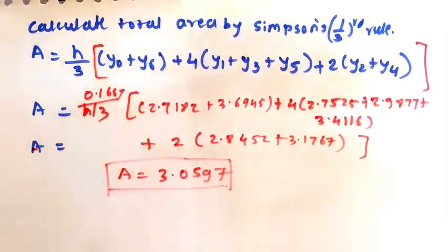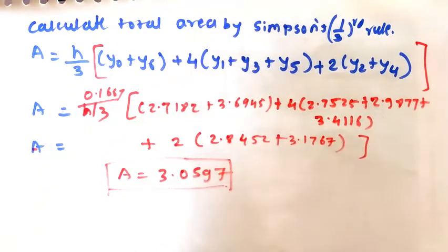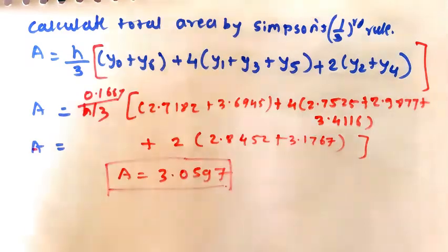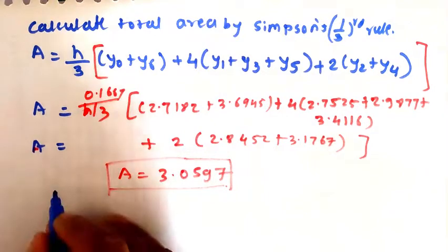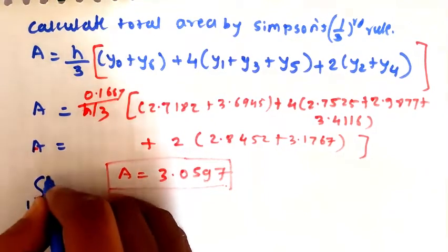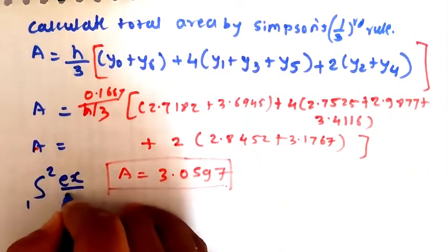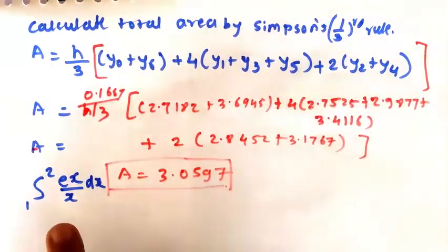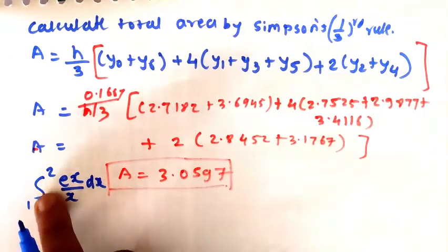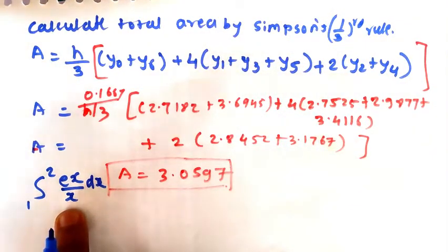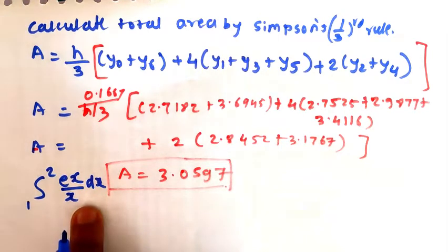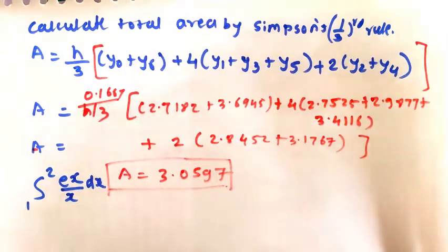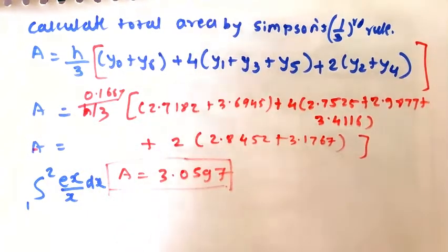So A equals 3.0597, which is the value of the integration from 1 to 2 of e raised to x divided by x dx. I hope you understood this numerical. Thank you. Thanks for watching.